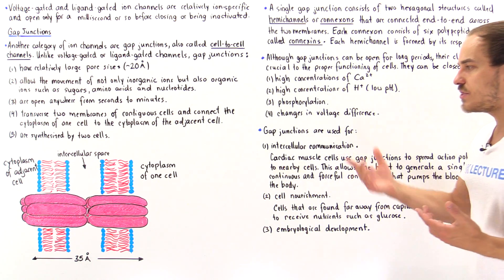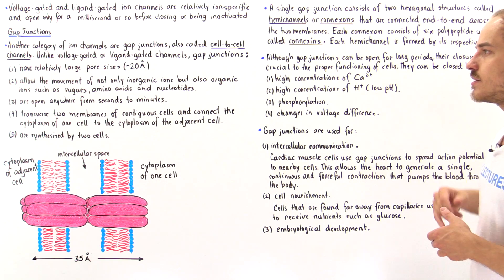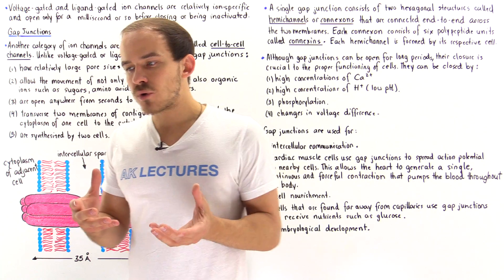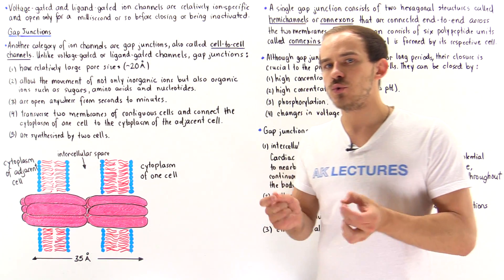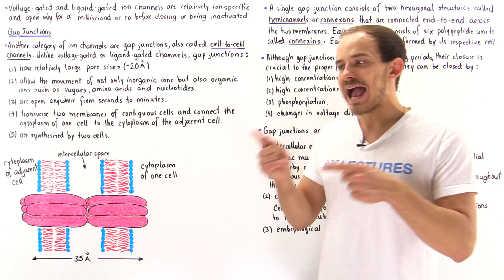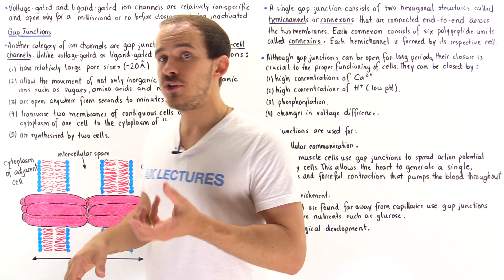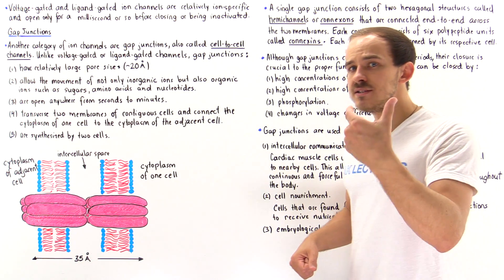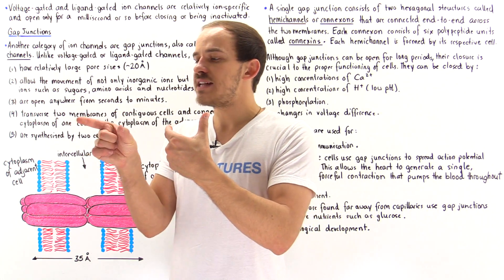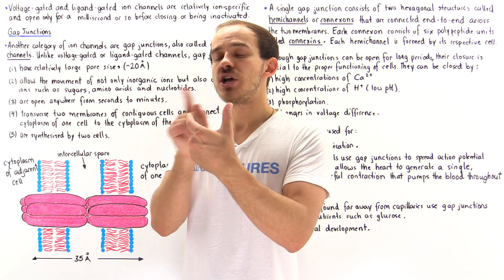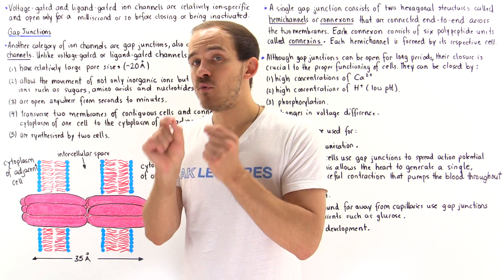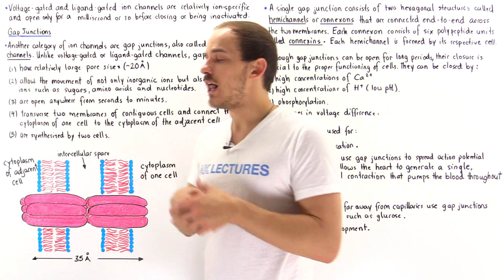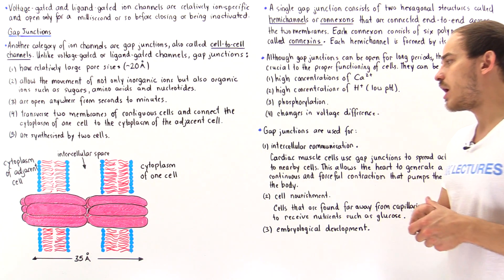Another area that uses gap junctions for communication between nearby cells is inside the brain. Certain types of nerve cells don't use neurotransmitters to send action potentials from one cell to another. Instead, they use gap junctions. The presynaptic cell and the postsynaptic cell are connected by these gap junctions, allowing the quick movement of the action potential from the presynaptic neuron to the postsynaptic neuron.